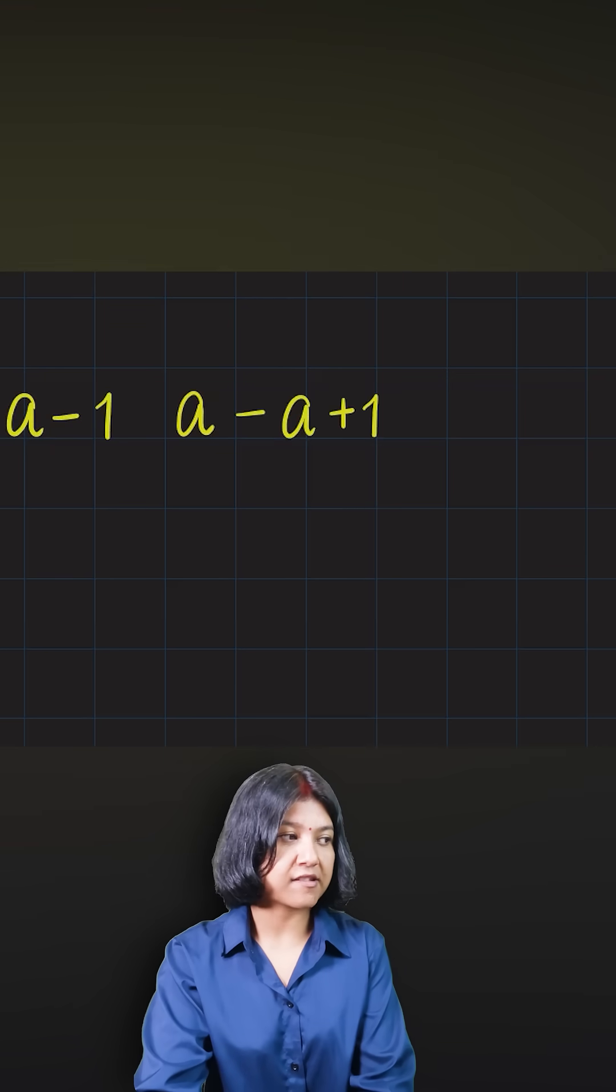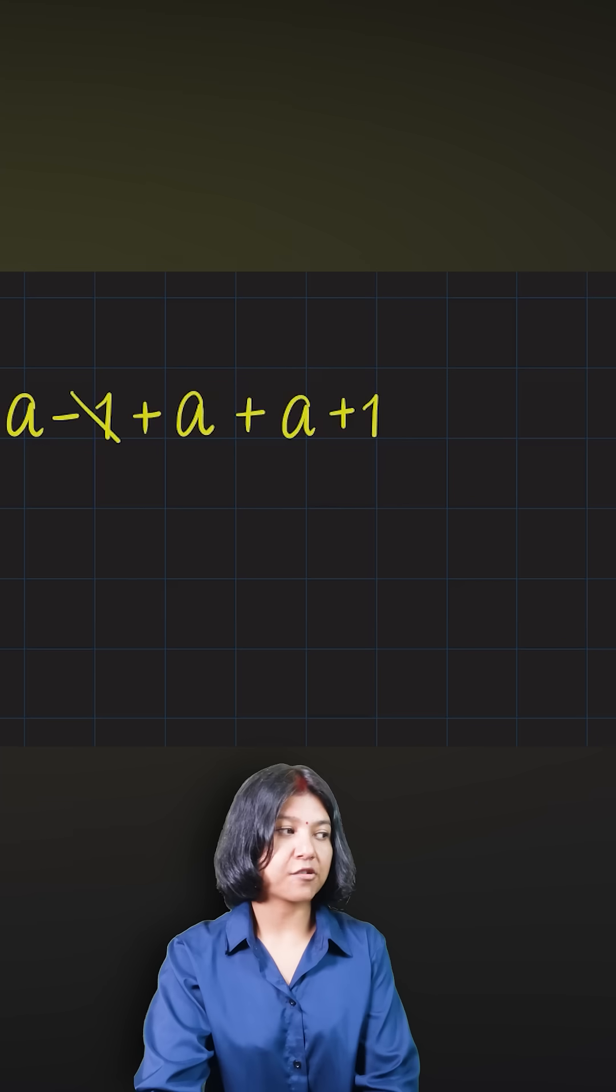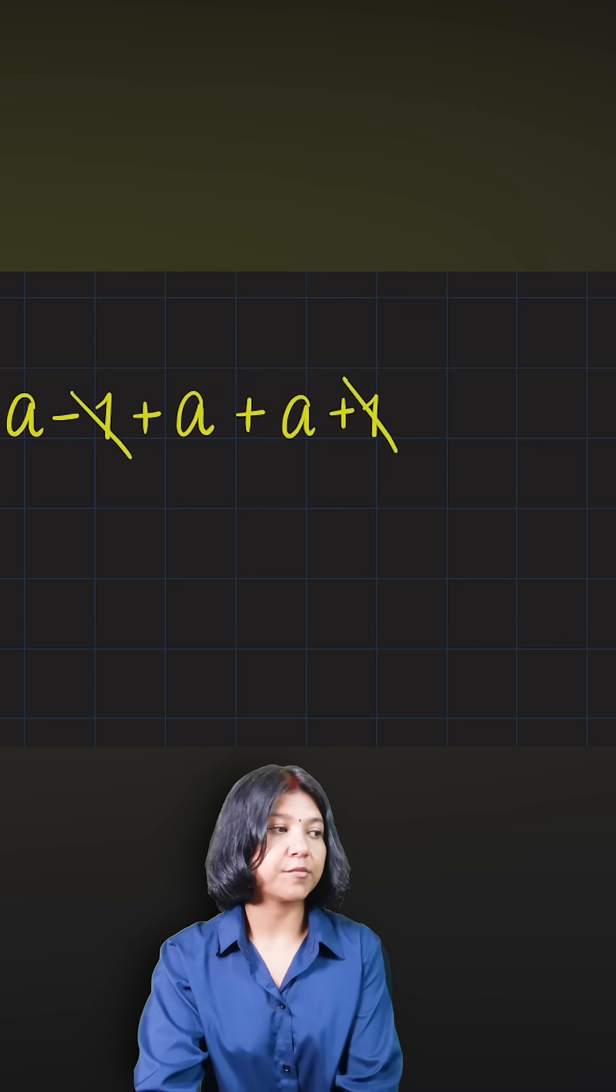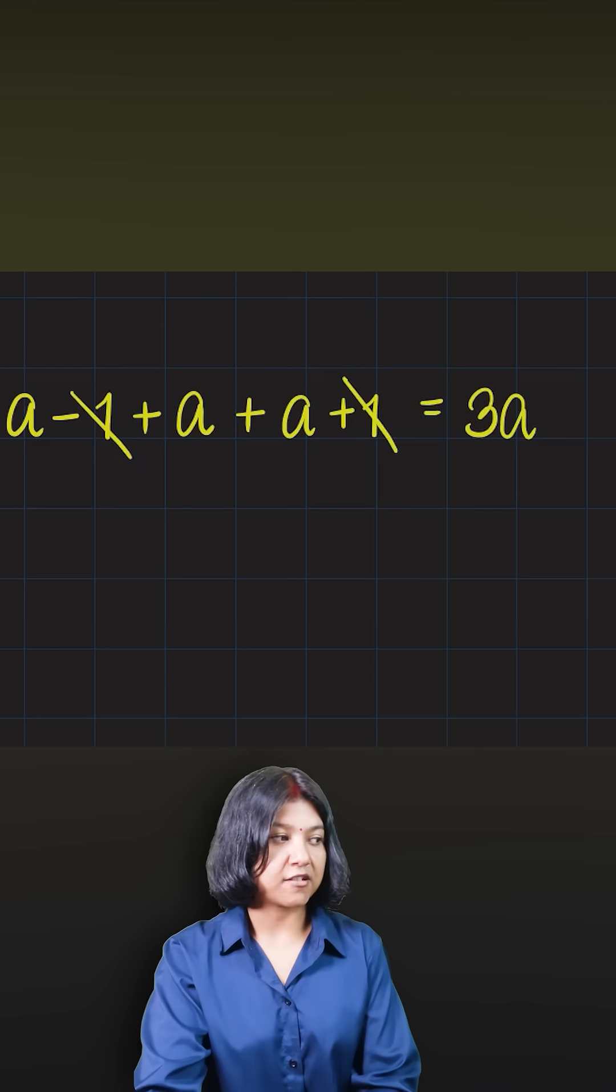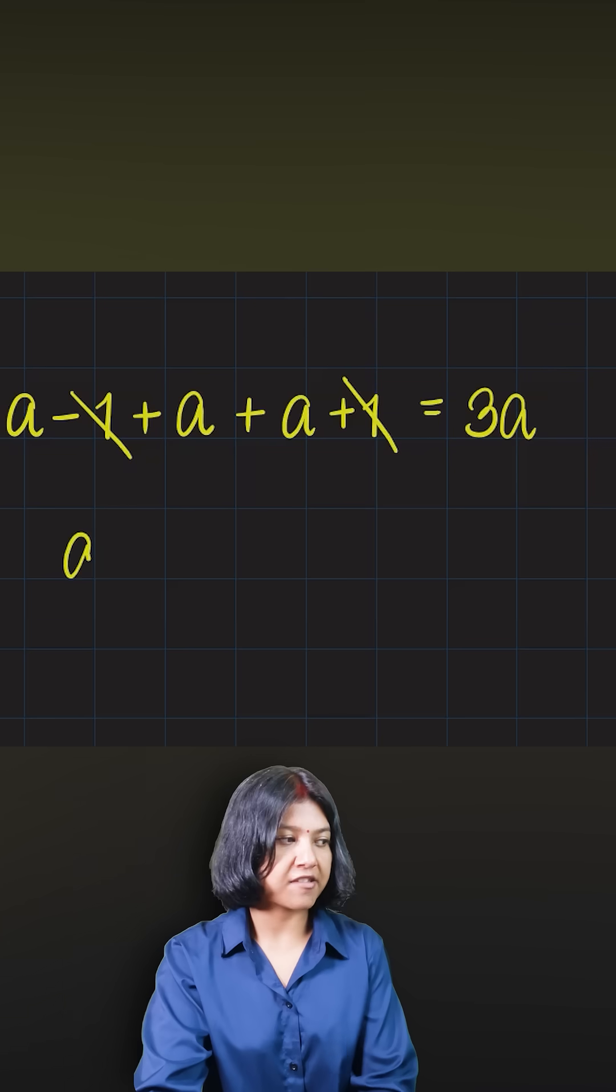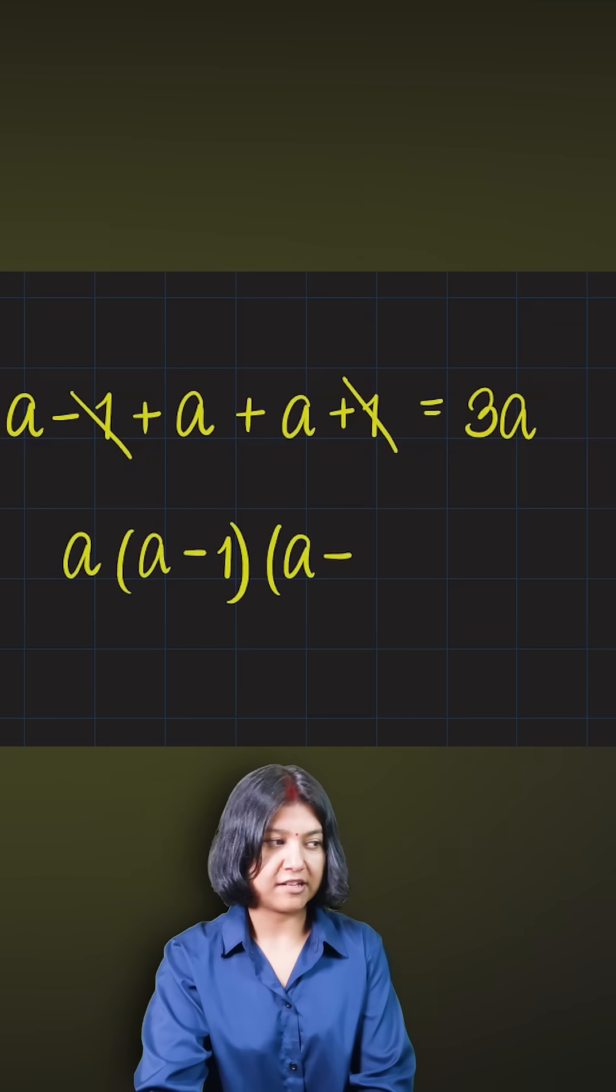The reason we're taking this is now their sum is very easy to find. Minus one plus one is zero, so the sum here happens to be just three a. And now the sum is equal to the product. What are the terms we have considered? a is the middle one, a minus one was the previous, and a plus one is the next one.